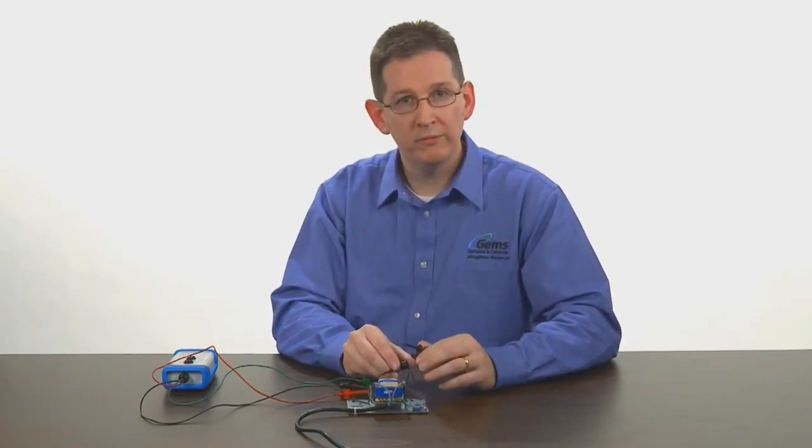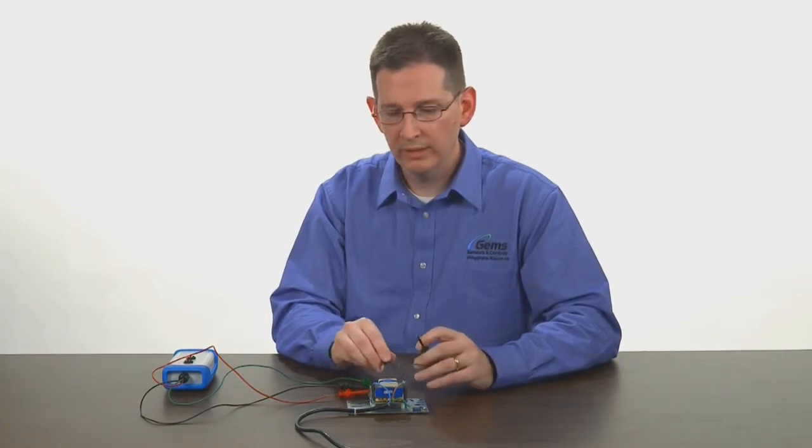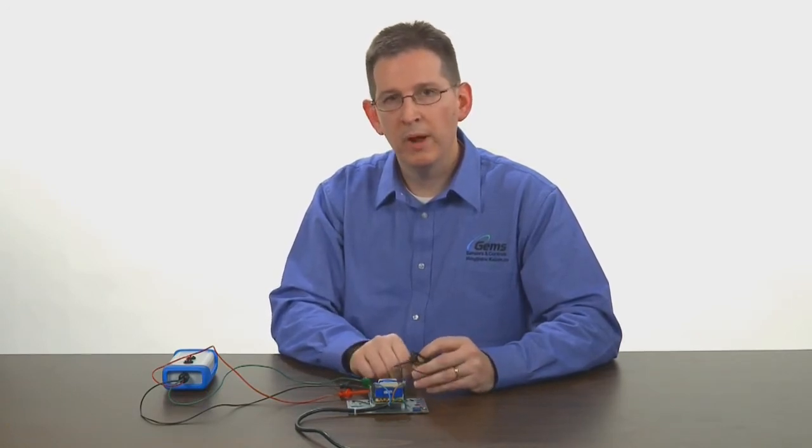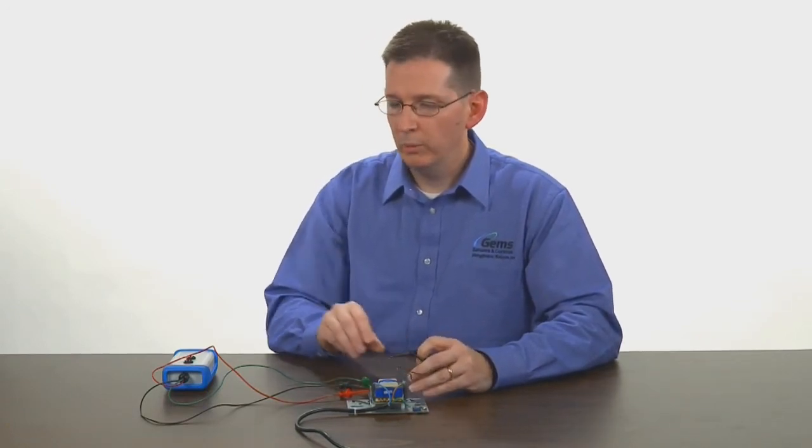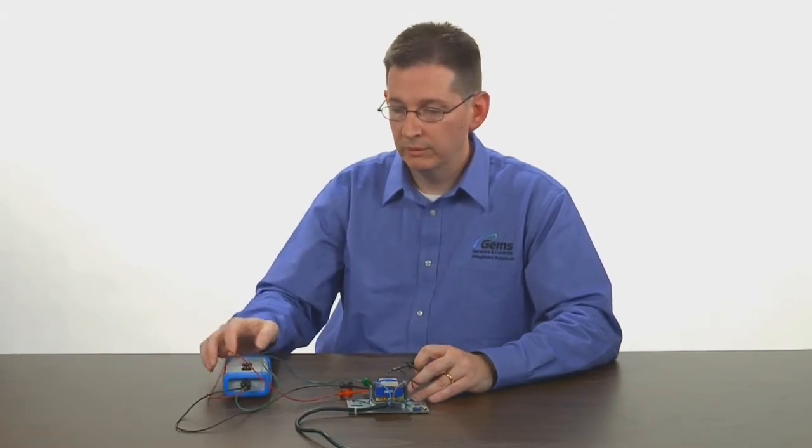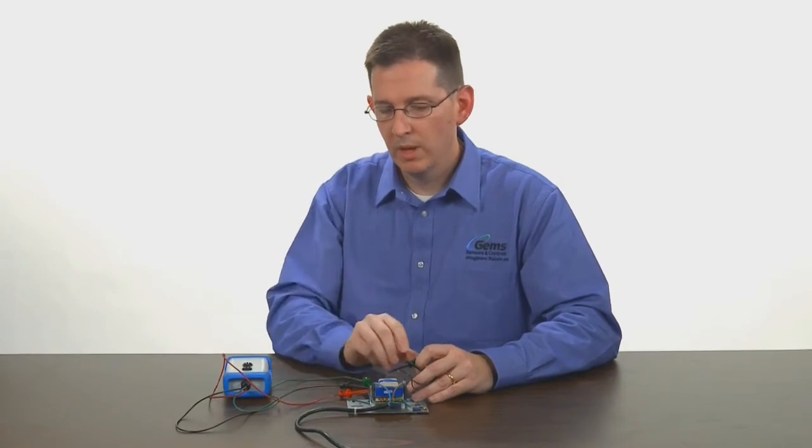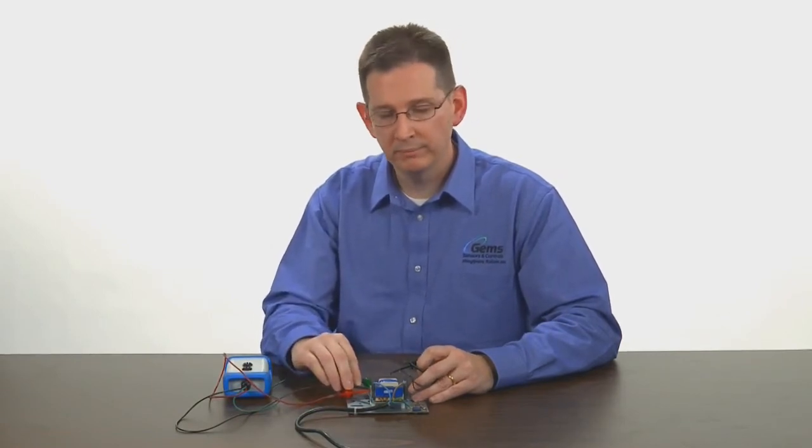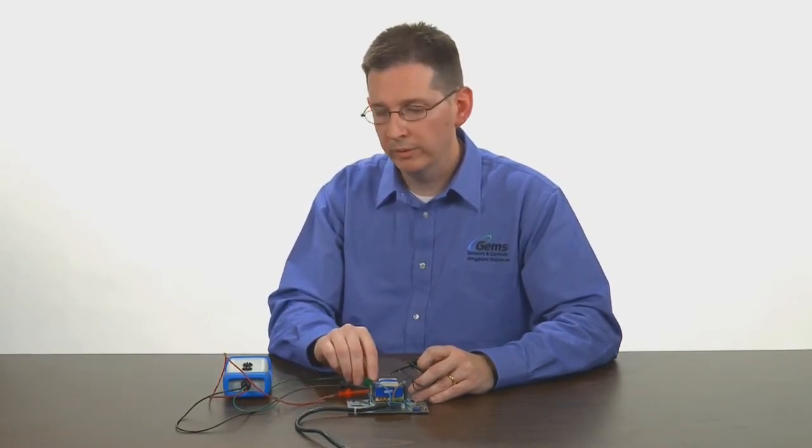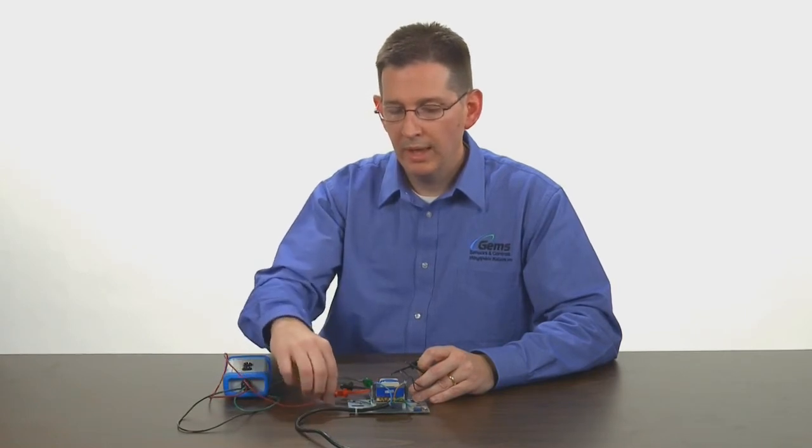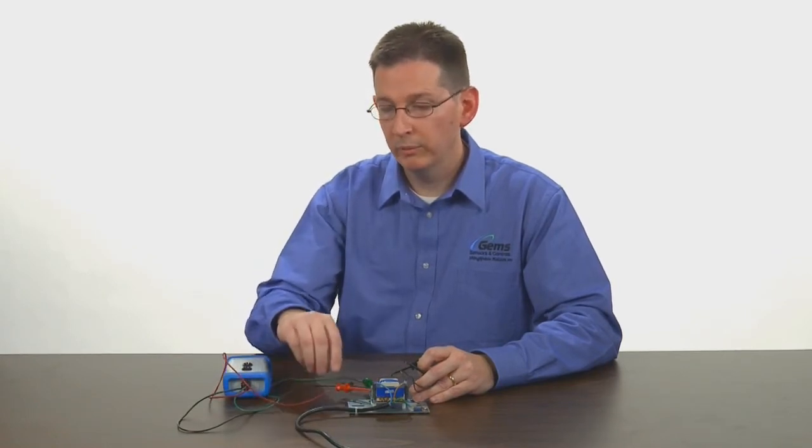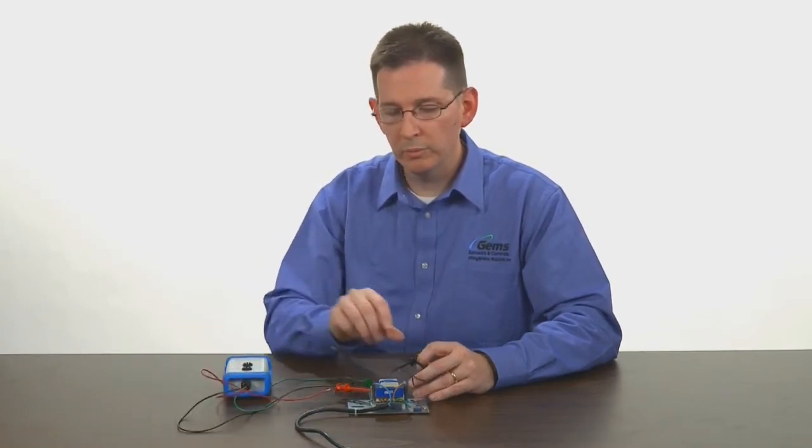Another way to verify the functionality of your product is to monitor the relay status. We've done that here with a light box. We've connected to the common the normally open with the green wire and the normally closed side of the relay with the red wire with their corresponding lights.